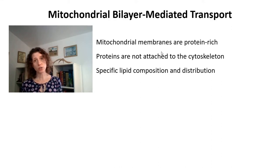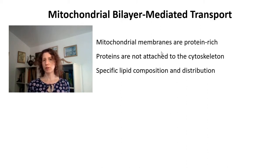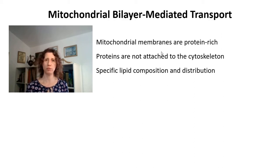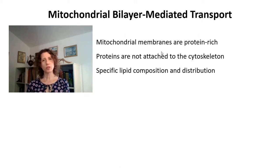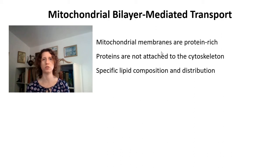The mitochondrial inner membrane has a different lipid composition from most cell membranes — specifically, it contains cardiolipin, which has four acyl chains. The inner membrane is also asymmetrical, with much more cardiolipin on the inner leaflet than the outer leaflet. This means the membrane is quite different from artificial membranes used to study channels in vitro, and you have to consider that protein function may change significantly when proteins are reconstituted in artificial membranes.